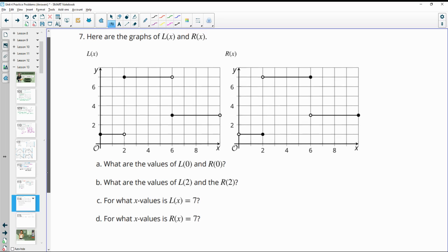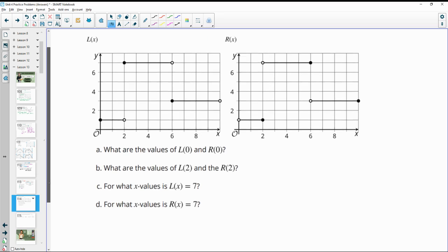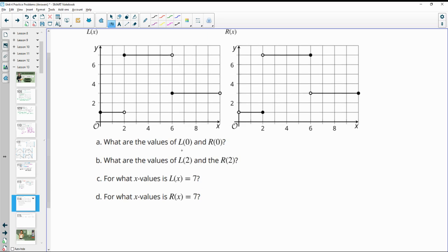Number seven. Here are the graphs of L(x) and R(x). Answer the following questions. So what are the values of L(0)? So we're looking at this one at zero. L(0) is one. And then R(0), so if we go to zero for R, we go to this open circle. So that means that R(0) is undefined.